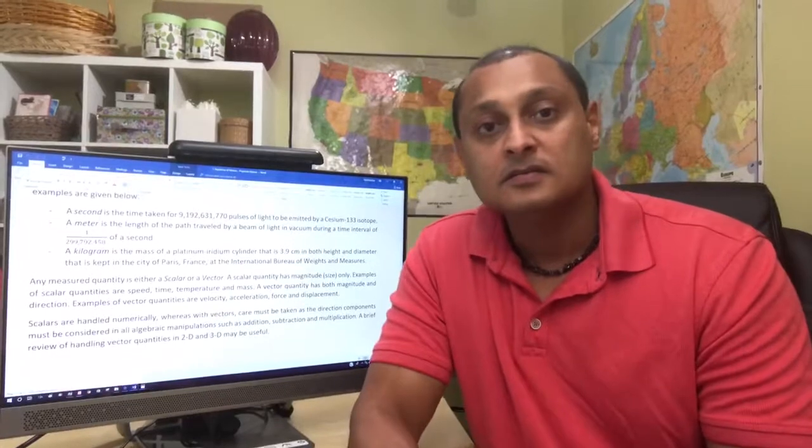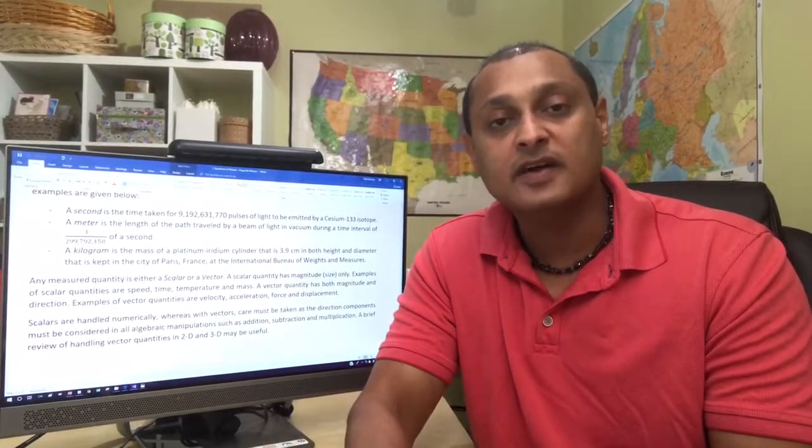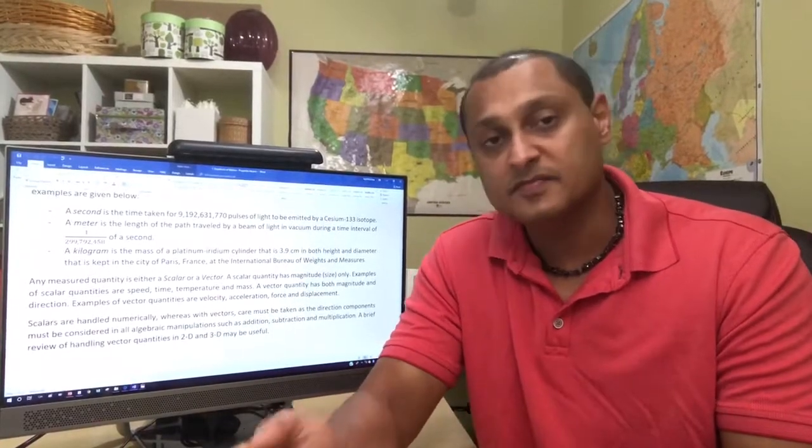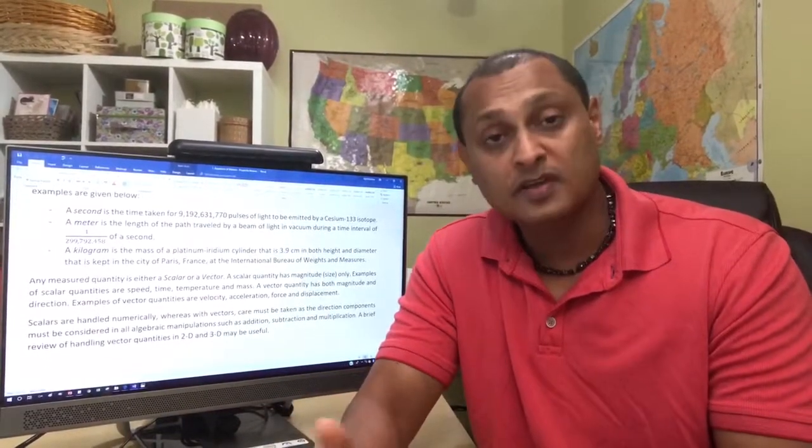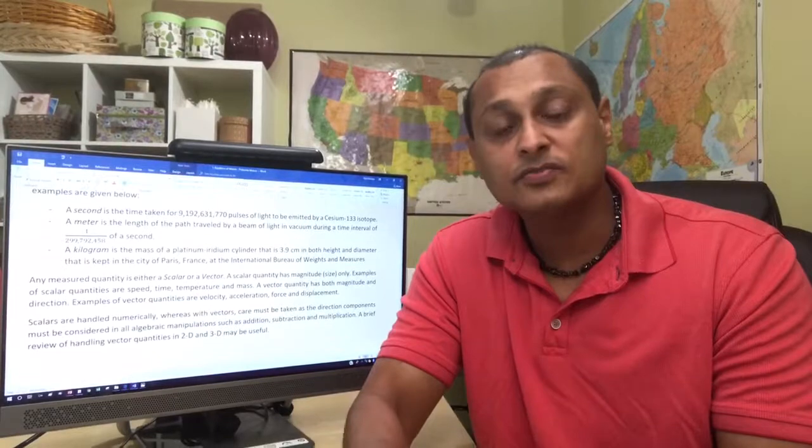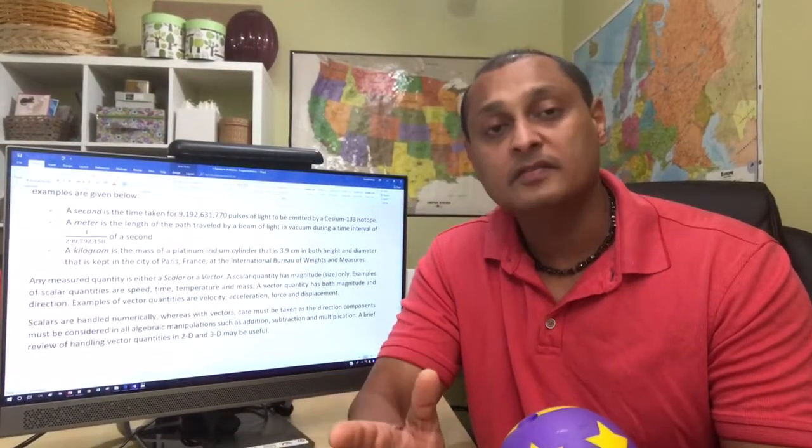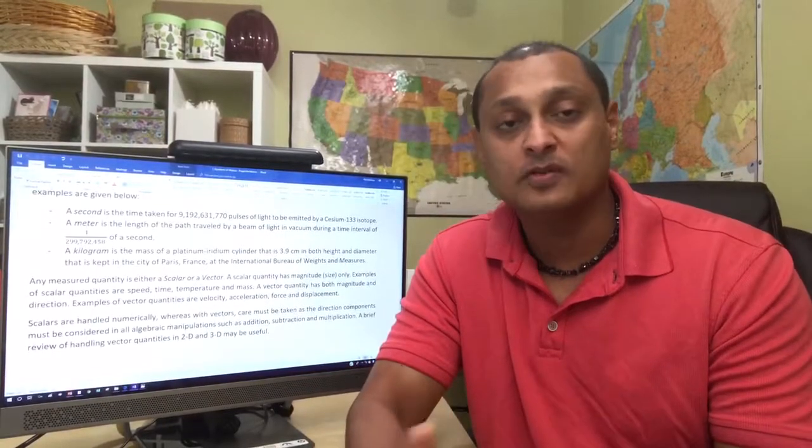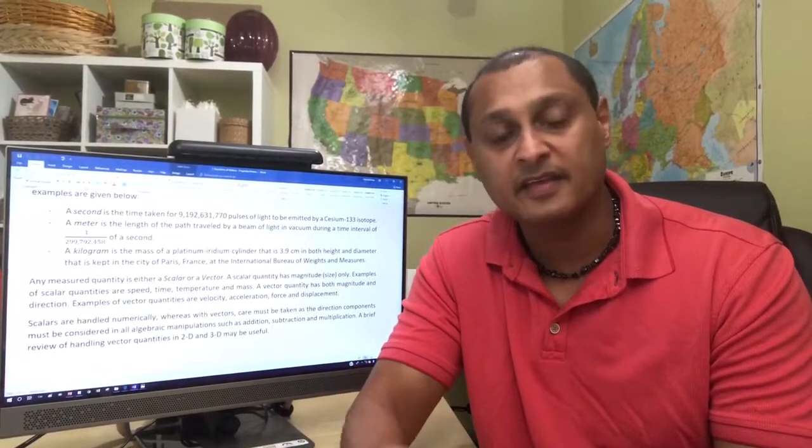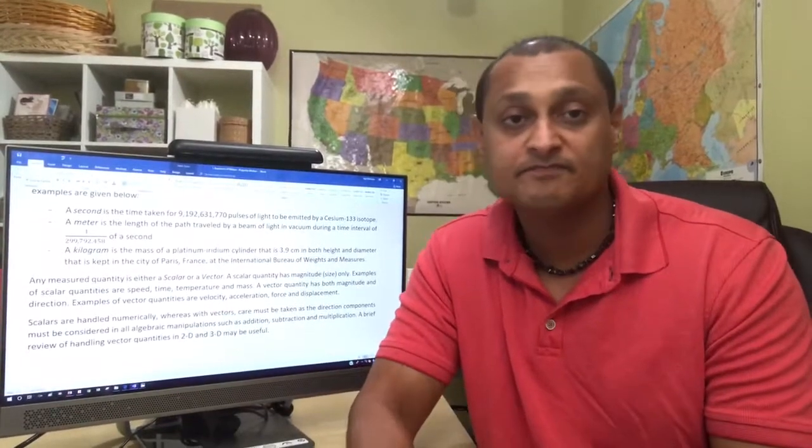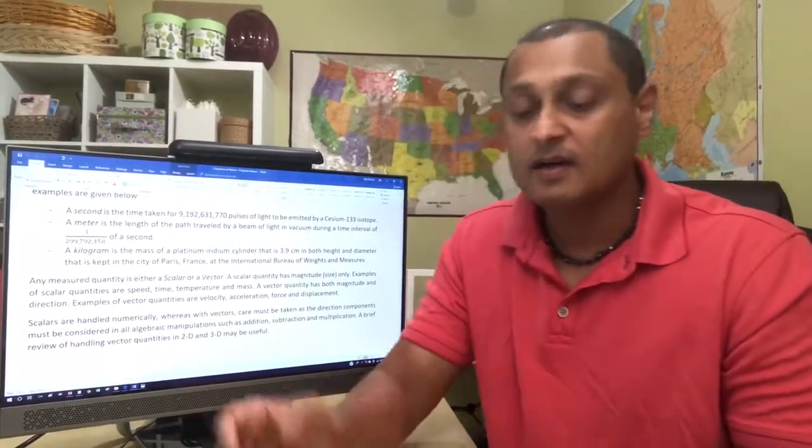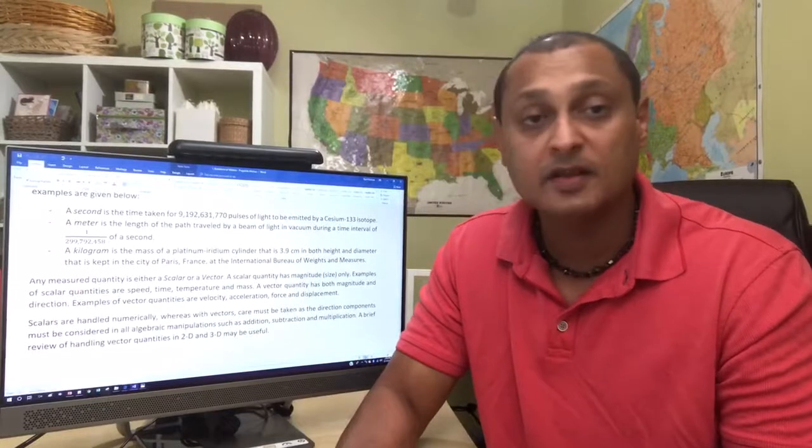For example, the time that we refer to as one second is referenced to a specific radioactive isotope of cesium. 9 plus billion, that is a very specific number, over 9 billion particles, radioactive particles that are ejected. The duration of the time required for this to happen is what the world defines as one second and everything else is referenced from that one second. So, that's another example of a physical phenomenon or property.